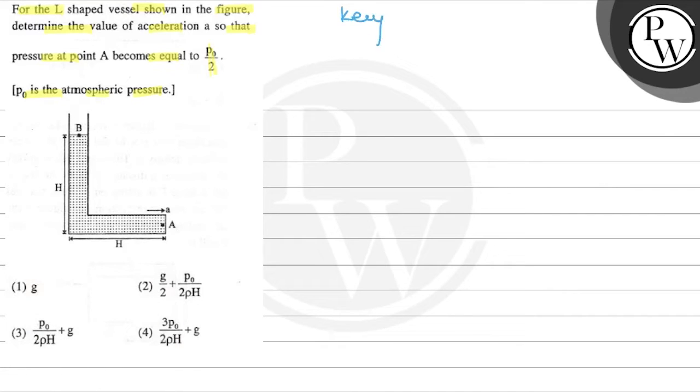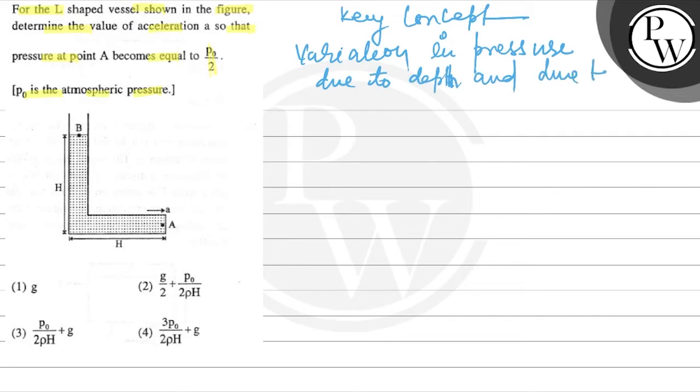What is the key concept? Variation in pressure due to depth and due to accelerating fluid. Accelerating vessel. Due to accelerating vessel. So this is your key concept basically.